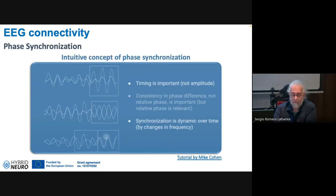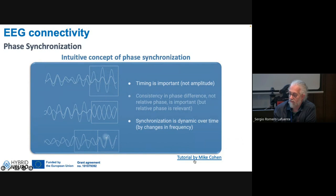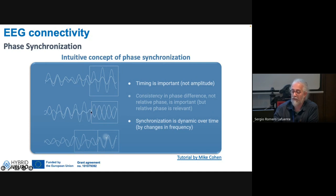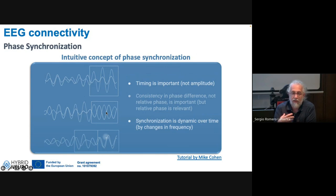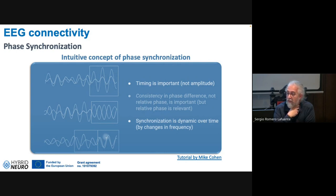If you want an intuitive grasp of phase synchronization, there's a YouTube tutorial by Miko Cohen I recommend. The key point is that the phase difference between two signals stays consistently the same over time — it's not important if they're shifted, but this consistency is what defines synchronized phase. Of course it's dynamic — it can appear and disappear depending on the condition. Cohen also has a nice book with tutorials and code.